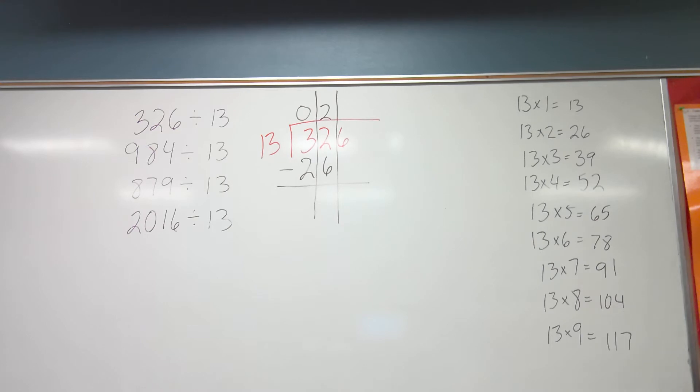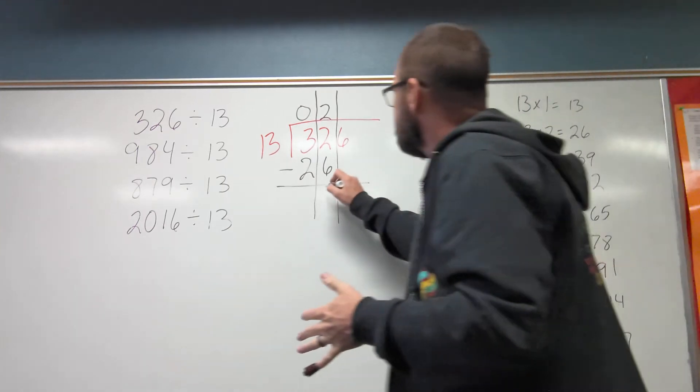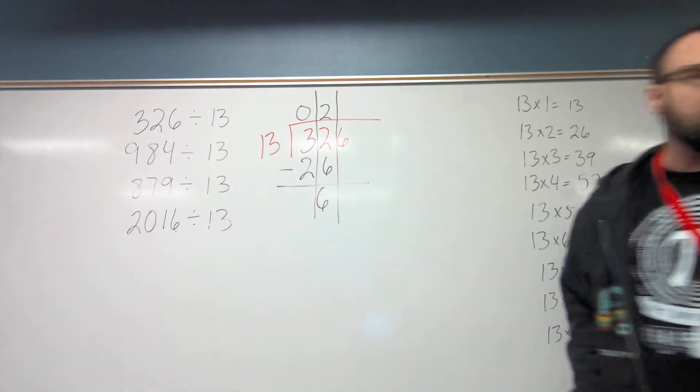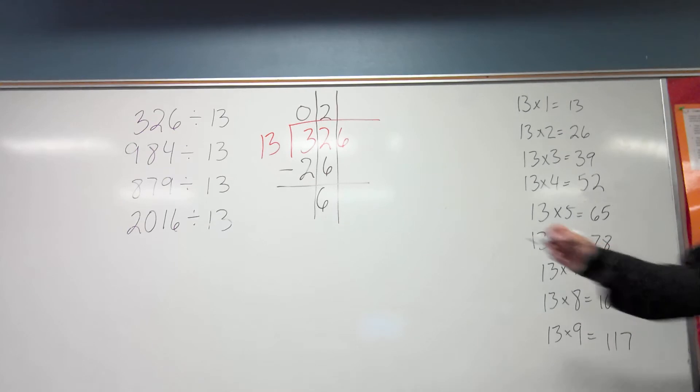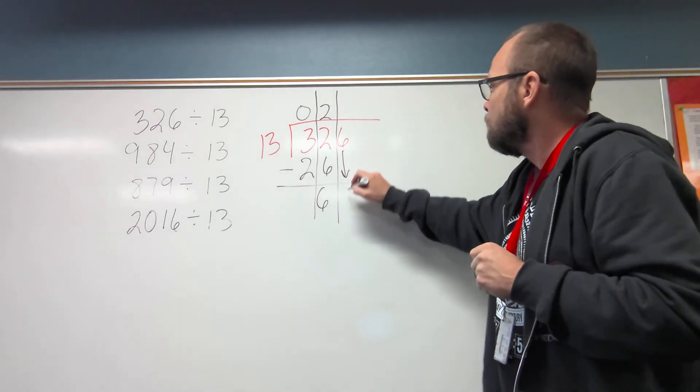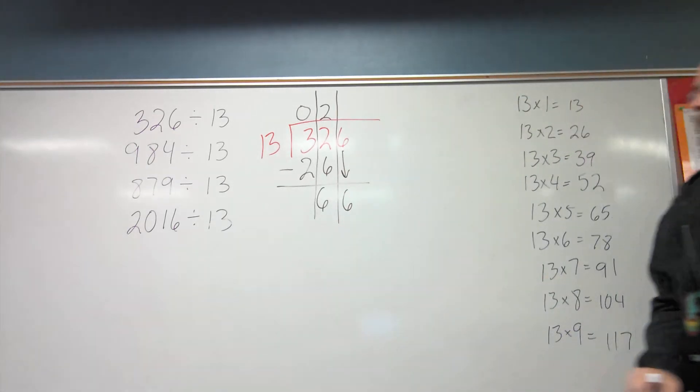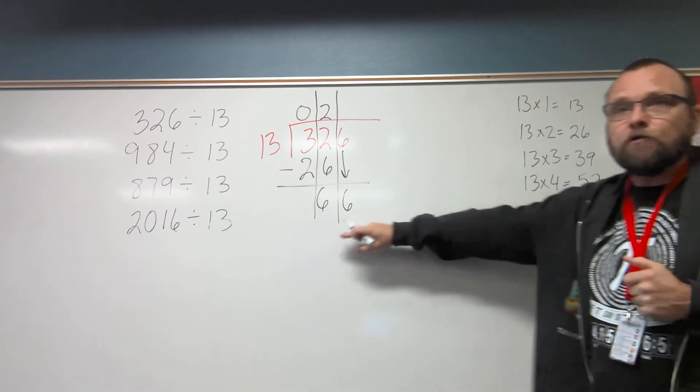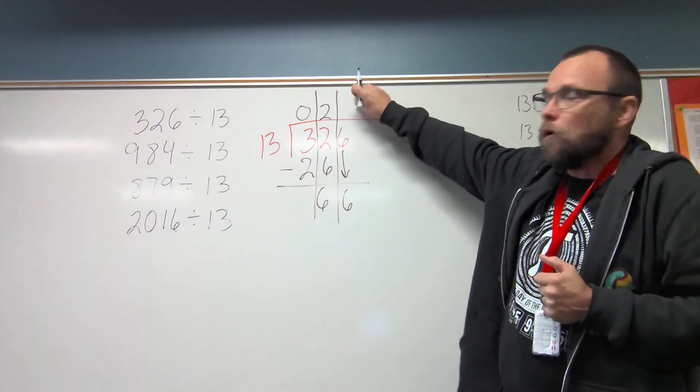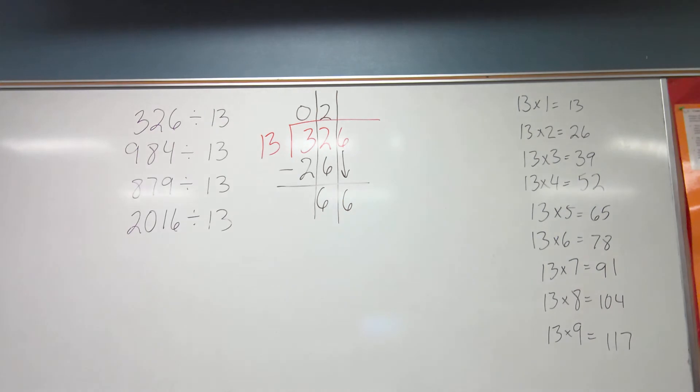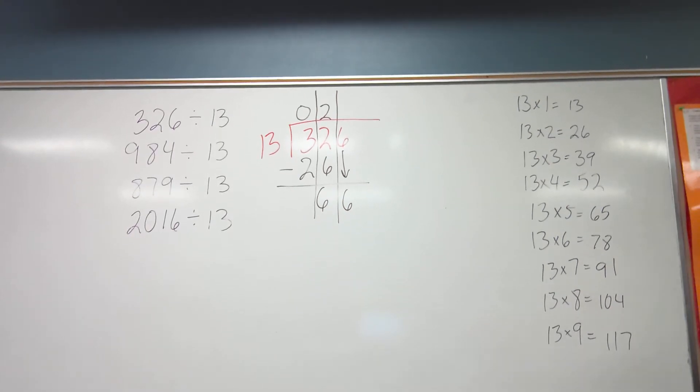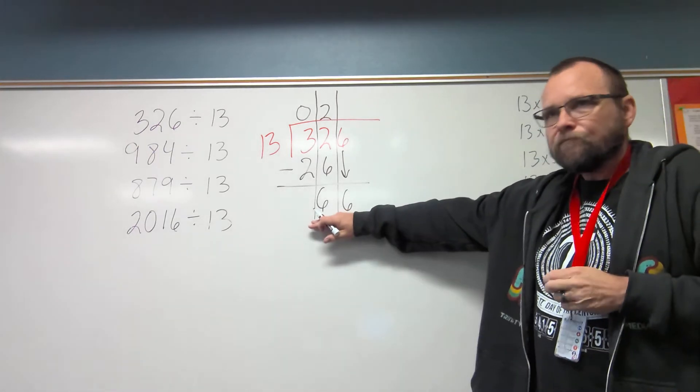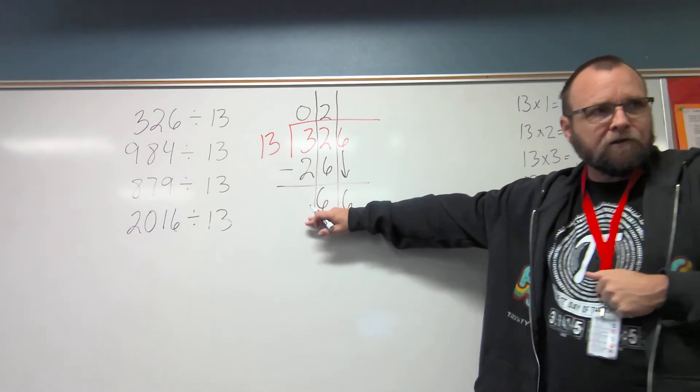So then I know it's 2 up here. I've already done this multiplication. 13 times 2 is 26. Then I subtract 26 from 32. 26 to 30 is 4, to 32 is 6. Then I have a 6 there. I bring down my next number, which is a 6. This, whatever I use to go into 66 is going to go above this 6. Don't be afraid.